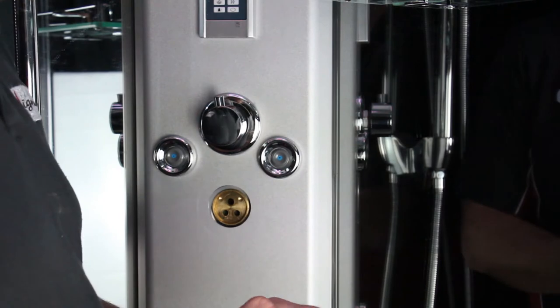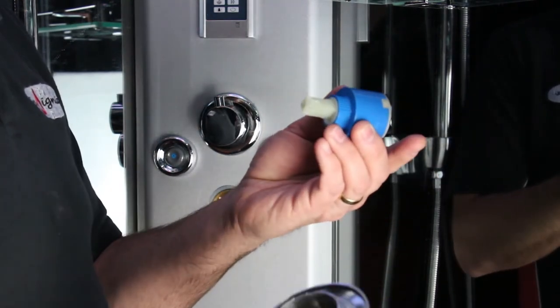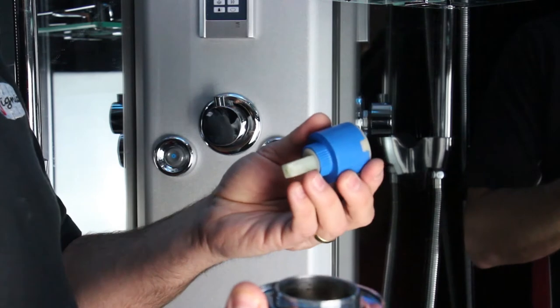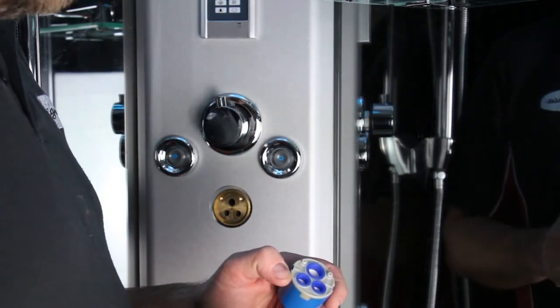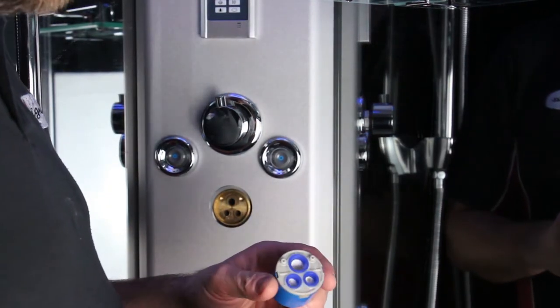This will now remove the whole cartridge and shroud. Once you've removed everything, you simply repeat the process once again to put everything back.